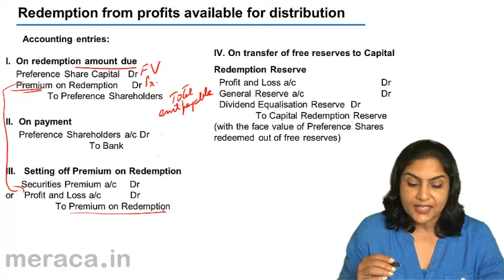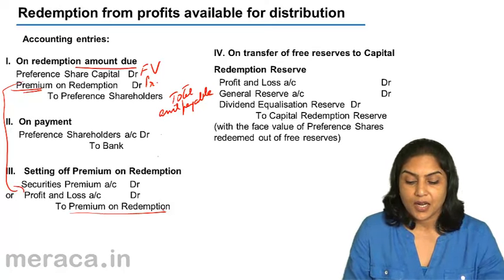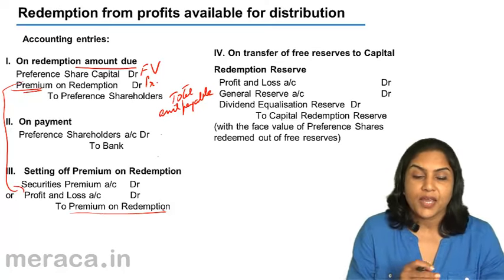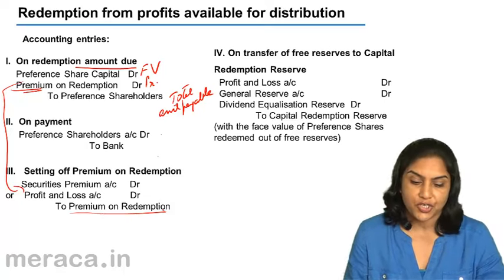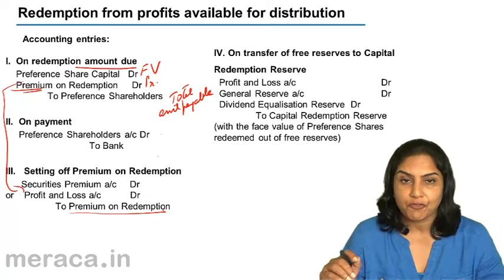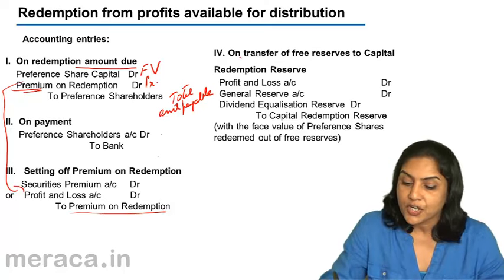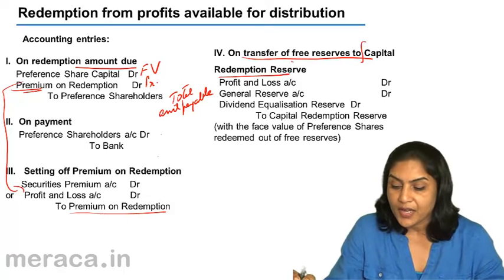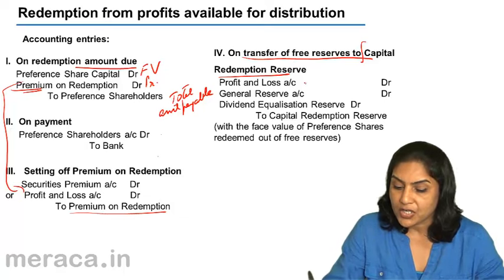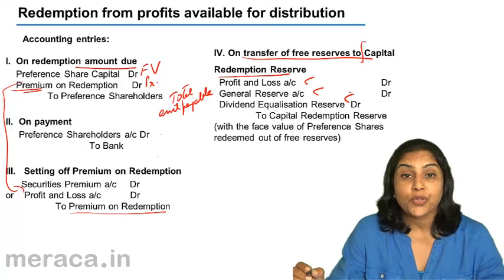These are the entries for redemption, and there is no change in these entries when we compare them to the entries out of proceeds of fresh issue. The difference is in the fourth entry — we pass an extra entry now, that is for transferring the free reserves to capital redemption reserve account. The entry is: profit and loss account, general reserve account, or dividend equalization reserve account debit, to capital redemption reserve account.